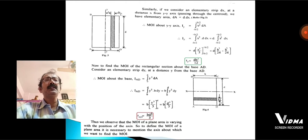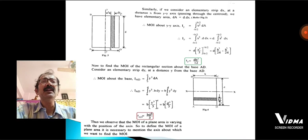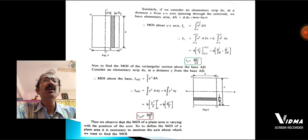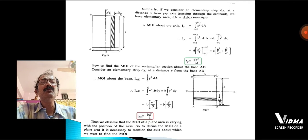To find the moment of inertia of the rectangular section about the base AD — the lowermost line — consider the same elemental strip dy at a distance y from AD. The moment of inertia with respect to the base is IAD = ∫y²·dA, with limits 0 to D. So IAD = BD³/3. We observe that the moment of inertia of a plane area varies with the position of the axis, so it is necessary to mention the axis about which we want to find the moment of inertia.